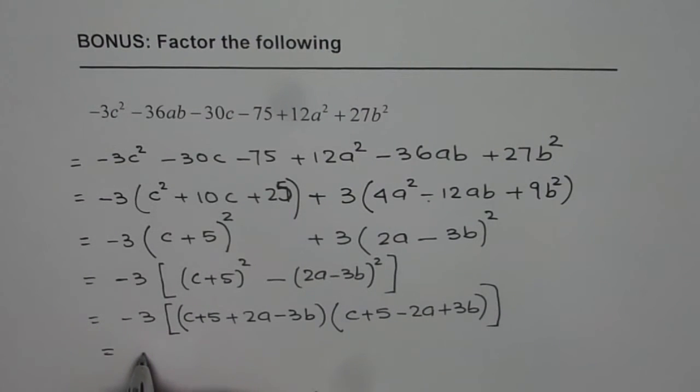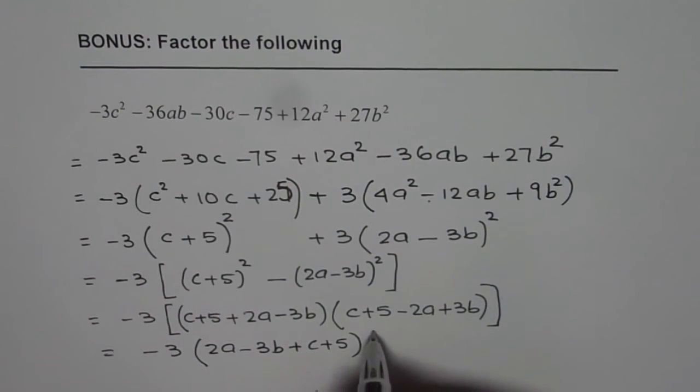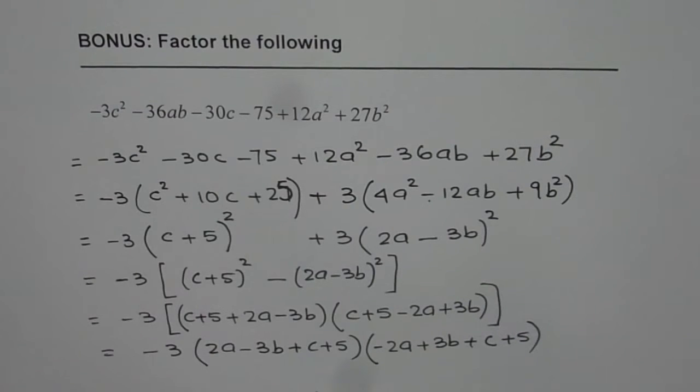So now we have a factored form. We could write this as minus 3 times, we can reorganize these terms. Let me write a as first. So we have 2a minus 3b plus c plus 5 times. In this case we have minus 2a plus 3b plus c plus 5.